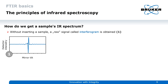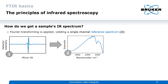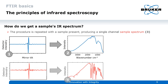This raw signal is then mathematically Fourier transformed into the classical IR plot of light intensity versus wavenumbers. We now have a single-channel reference spectrum. Then we insert the sample into the beam path and repeat the procedure. Fourier transformation then yields another single channel.